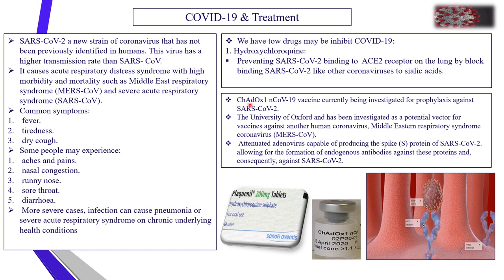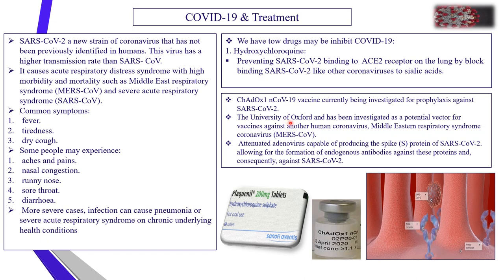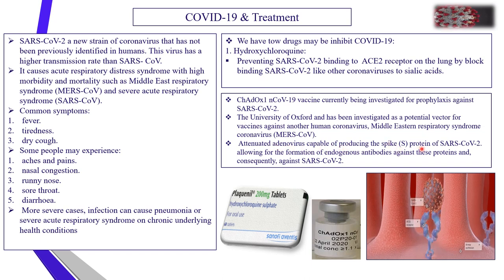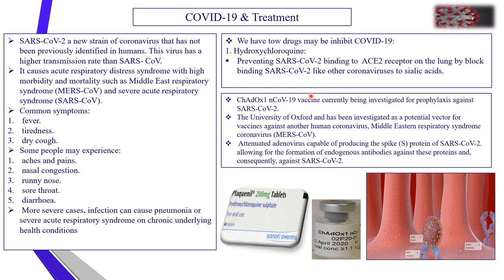The vaccine is a chimpanzee adenovirus vector-based vaccine for COVID-19, discovered by the University of Oxford, and used against coronavirus. It uses an attenuated adenovirus capable of producing the spike protein, which is found on the surface of the coronavirus, leading to formation of antibodies against SARS-CoV-2. Thank you all — any questions can be sent to the group leader.